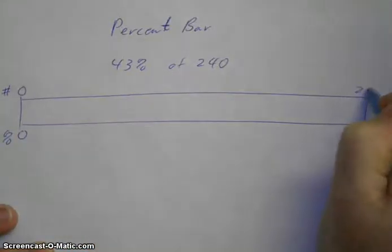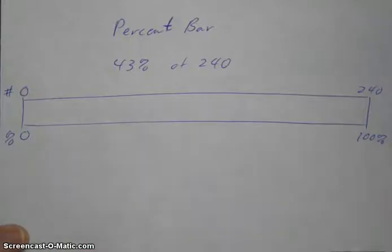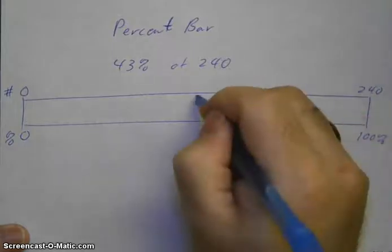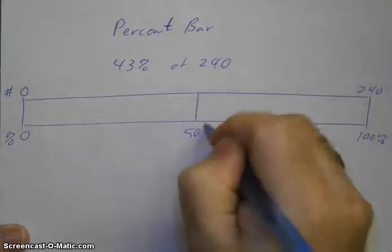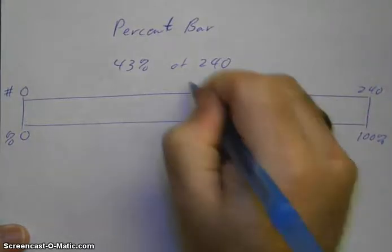If I'm looking for 43%, well basically this is a way to organize the information like you would with the benchmark percent. So halfway down that's going to be 50% and that would be 120.